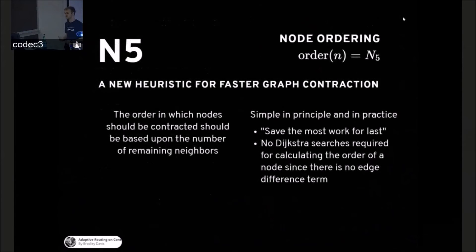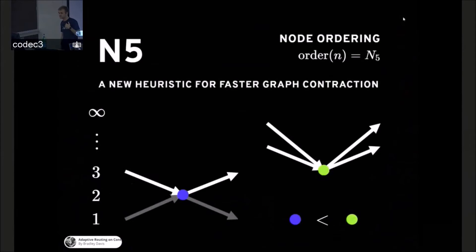The other thing we can do is use a different heuristic for ordering the nodes. It's kind of expensive in EDS-5 to do a Dijkstra search for every pair of neighbors of a node. It compounds very quickly. And so I had an idea that's simple in principle and practice. If I just want to contract as fast as possible and see what happens, why not save the most work for last? And so N5 is a heuristic where you sort the nodes by how many neighbors they have above them. And that's it. You don't have to search for anything. You just keep track of that. It's a very easy thing to evaluate. So using N5, the blue node has a lower order than the green node purely because the green node has four upward neighbors and the blue node only has two.